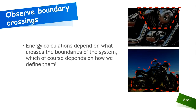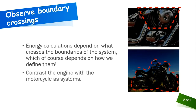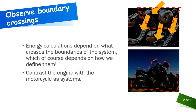The energy balance will differ depending on how we define the system boundary. For just the engine block, what crosses the boundary includes fuel as chemical energy coming in, exhaust as chemical and heat energy leaving, and mechanical energy coming out through the piston that propels the bike forward.